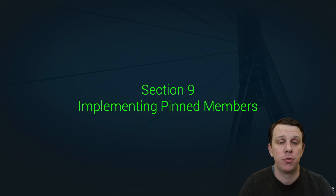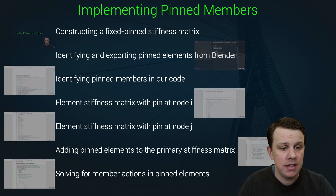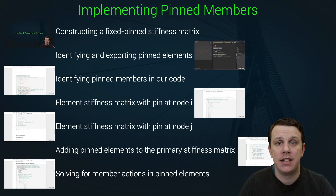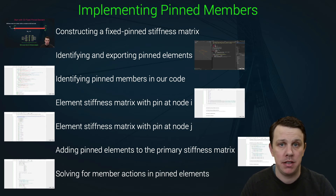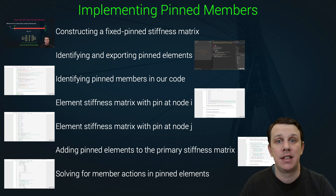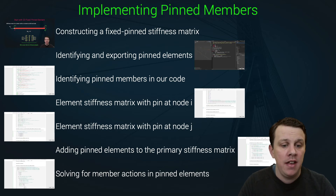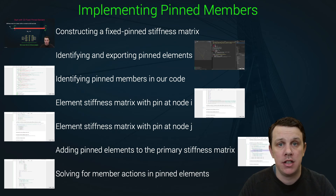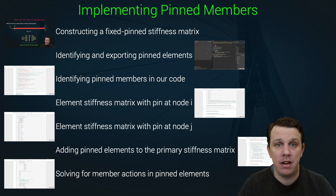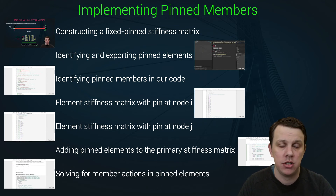After we complete this section, we'll have built in the functionality to include those rotational releases into our models. In the next lecture, we'll take a closer look at the stiffness matrix used to model these pinned beam elements — it's going to be a 10 by 10 stiffness matrix. Then we'll jump back over to Blender, where we'll identify the locations of pins within our portal frame structure and write a script to export that location information to a CSV file.